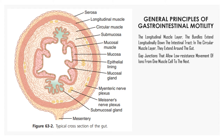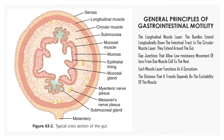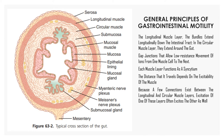Gap junctions allow low-resistance movement of ions from one muscle cell to the next. Each muscle layer functions as a syncytium, meaning that when an action potential is elicited anywhere within the muscle mass, it generally travels in all directions. The distance it travels depends on the excitability of the muscle — sometimes stopping after only a few millimeters, other times traveling many centimeters or the entire length of the intestinal tract. Because connections exist between the longitudinal and circular muscle layers, excitation of one often excites the other as well.